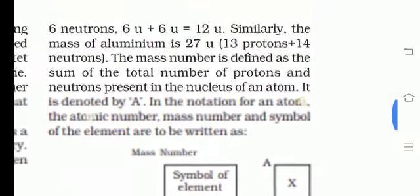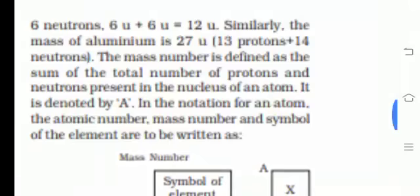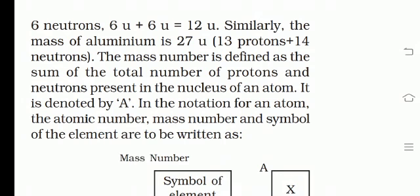So 6u plus 6u equals 12u. Similarly, the mass of aluminium is 27, as aluminium has 13 protons and 14 neutrons. The mass number is defined as the sum of the total number of protons and neutrons present in the nucleus of an atom. Mass number denoted by capital A. Jab ham dono ko add karein, woh mass number ke equal ho jaega.